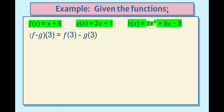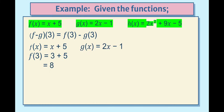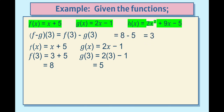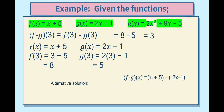For (f − g)(3): f(3) = 8 and g(3) = 5. Since we are finding the difference, 8 − 5 = 3. Alternative solution: (f − g)(x) = −x + 6. Since x = 3, substitute: −3 + 6 = 3.